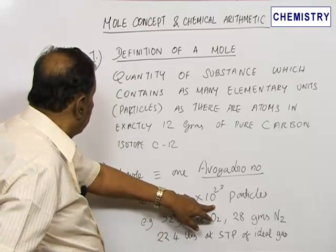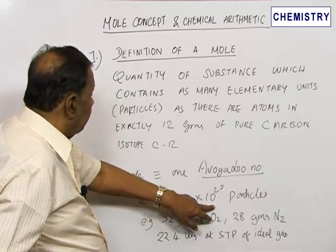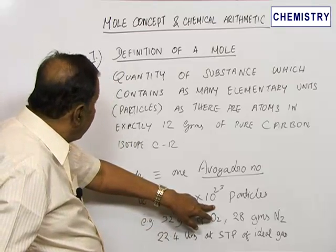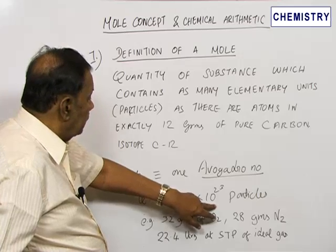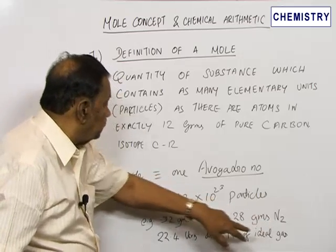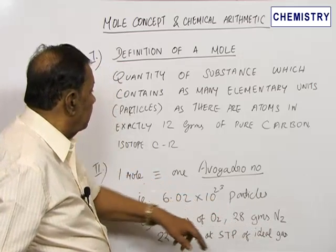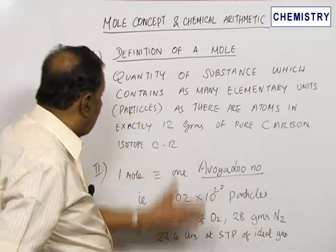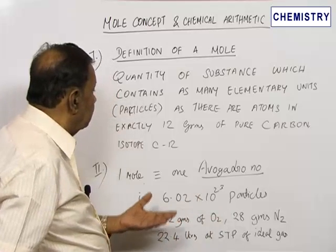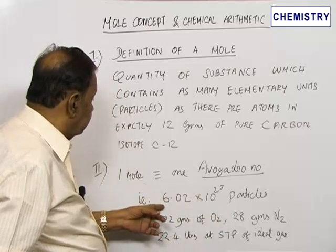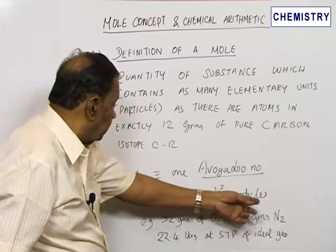Similarly, we know that the atomic weight of nitrogen is 14. N₂, therefore, is 14 plus 14, so 28 is the molecular weight of nitrogen. So you take 28 grams of nitrogen, and that is one mole, and it contains so many particles or molecules.